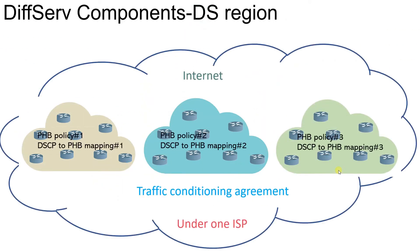A DS region is a group of DS domains, usually managed by one administrator such as an ISP. In some cases, each DS domain is maintained by a different ISP administrator, and each has its own PHB policy and DSCP-to-PHB mapping. When a packet traverses from one domain to another, the SLA must be communicated to the next domain. This is done by boundary nodes using a Traffic Conditioning Agreement, which informs the second domain what policies apply to incoming packets so the same SLAs are applicable in the second domain as well.